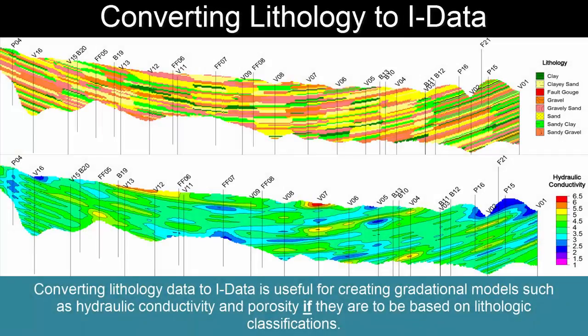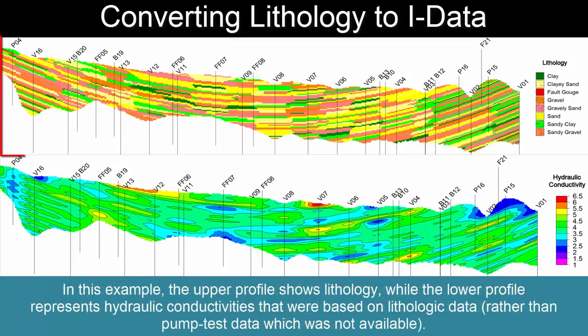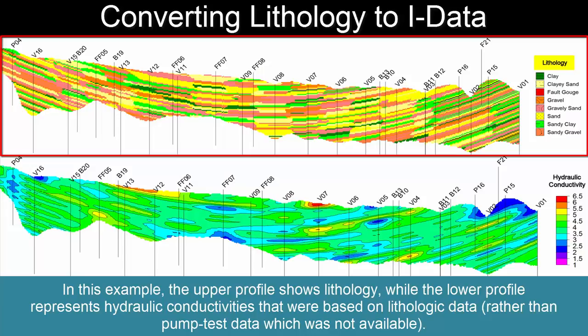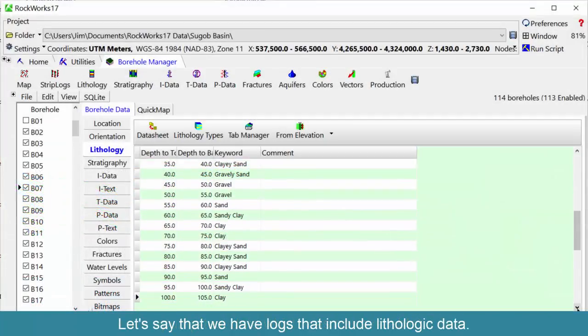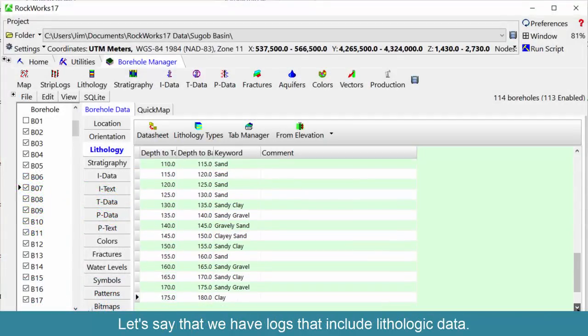Converting lithology data to IDATA is useful for creating gradational models such as hydraulic conductivity and porosity if they are to be based on lithologic classifications. In this example, the upper profile shows lithology, while the lower profile represents hydraulic conductivities that were based on lithologic data, rather than pump test data which was not available. Let's say that we have logs that include lithologic data.